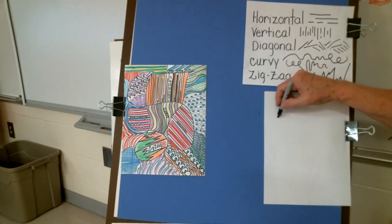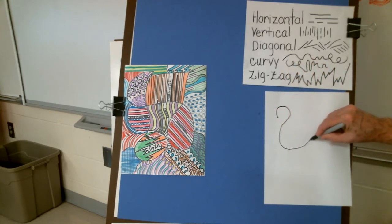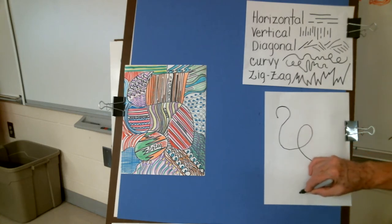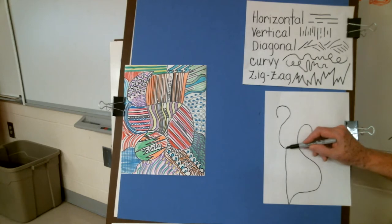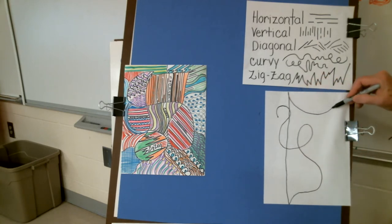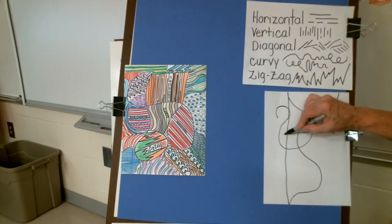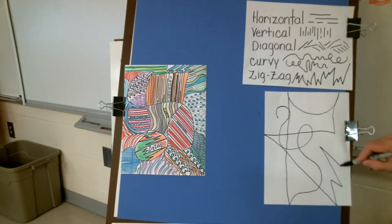Place your marker back on that dot and start moving it around. I've started with curvy lines. I want you to make nice big shapes. Don't make a whole bunch of tiny ones or you're going to spend a lot of time trying to fill all those lines in with different shapes and patterns. There's a vertical line I've created. Now I'm going to come over with a curve here. I'm going to go straight over. I've made a horizontal line. Now I'm going to use a diagonal and then add some zigzags here.